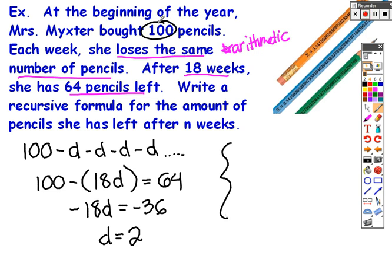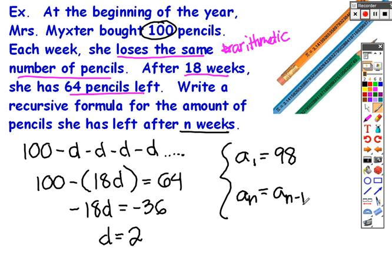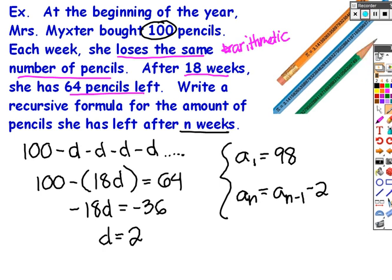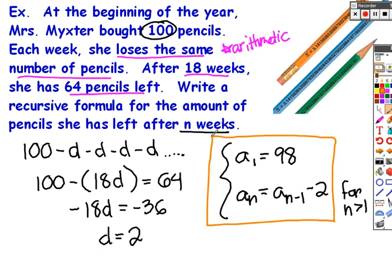Writing the recursive formula carefully: this is almost like an a sub 0 or initial value. A sub 1, the pencils after the first week — starting with 100 and losing 2 per week, after week 1 I'd have 98 pencils. Then for the nth week, the amount of pencils in the nth week is the previous week's amount a sub n minus 1, minus 2. That second line is how I get any term beyond the first week. This is the recursive formula.